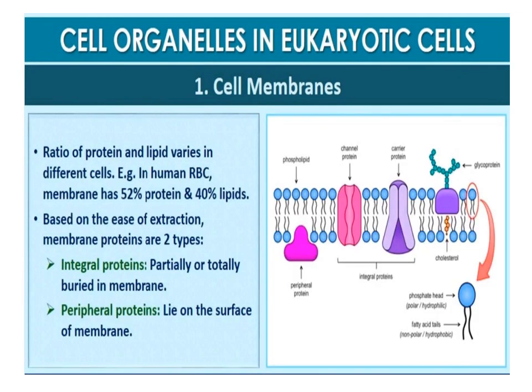The lipid component of the membrane mainly consists of phosphoglycerides. Biochemical investigation clearly revealed that the cell membrane also possesses protein and carbohydrate. The ratio of protein and lipid varies considerably in different cell types. In human beings, the membrane of the erythrocyte has approximately 52% protein and 40% lipid. Membrane proteins can be classified as integral or peripheral; peripheral proteins lie on the surface of the membrane while integral proteins are partially or totally buried in the membrane.